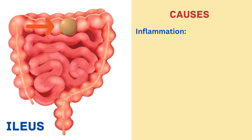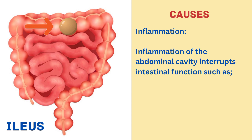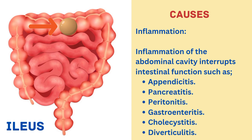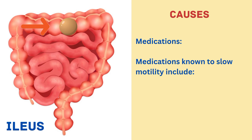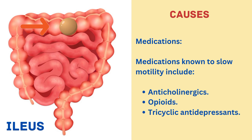The next cause is inflammation. Inflammation of the abdominal cavity interrupts intestinal function, such as appendicitis, pancreatitis, peritonitis, gastroenteritis, cholecystitis and diverticulitis. The next cause is medications. Medications known to slow motility include anticholinergics, opioids, tricyclic antidepressants and phenothiazines.